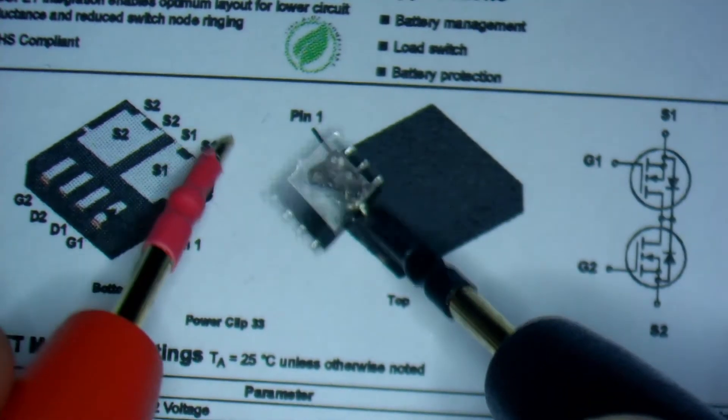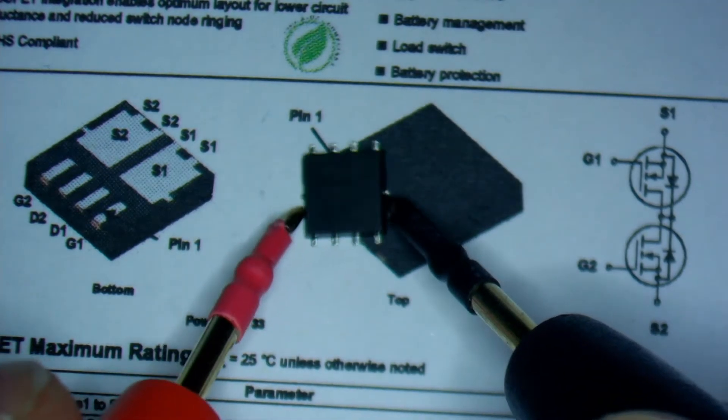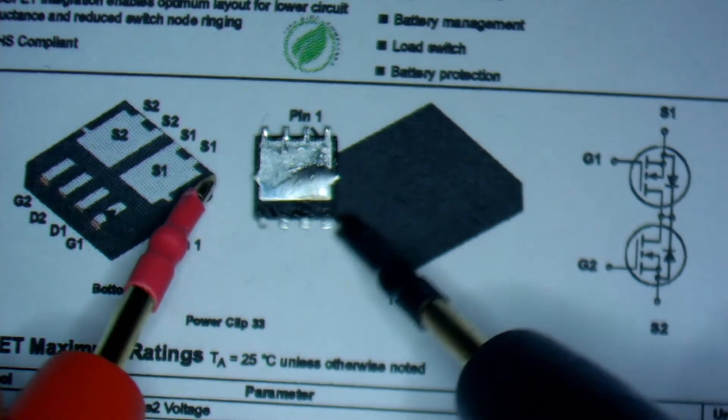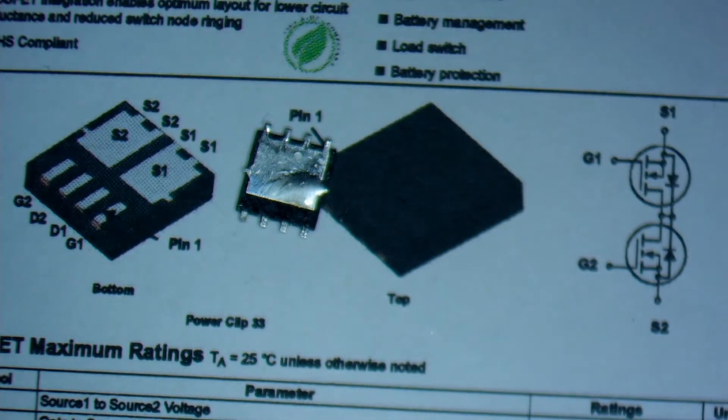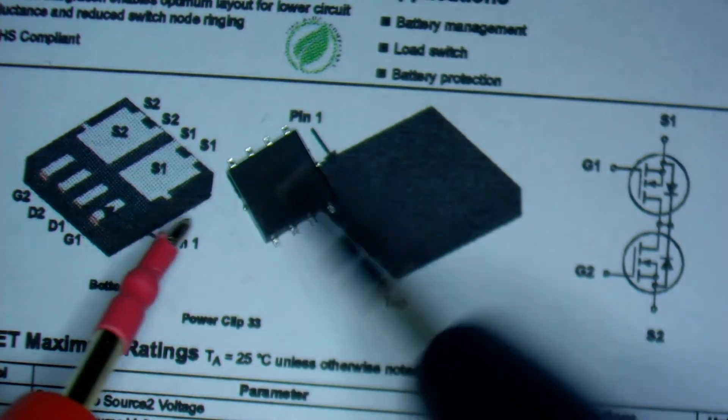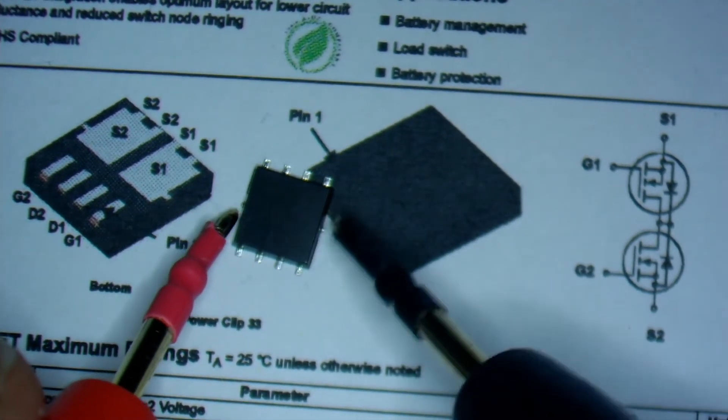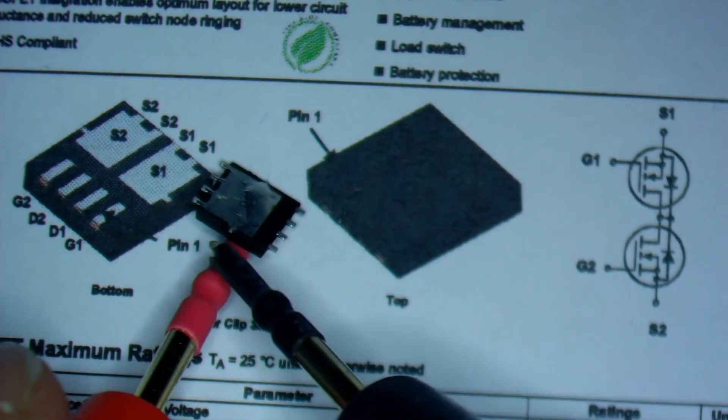So this one is a P-channel MOSFET. It's usually called a BATFET because it's usually used to control the battery current. So this one from the MacBook Air or something, I believe. But it's usually the same for all type of MOSFETs used in common notebooks.